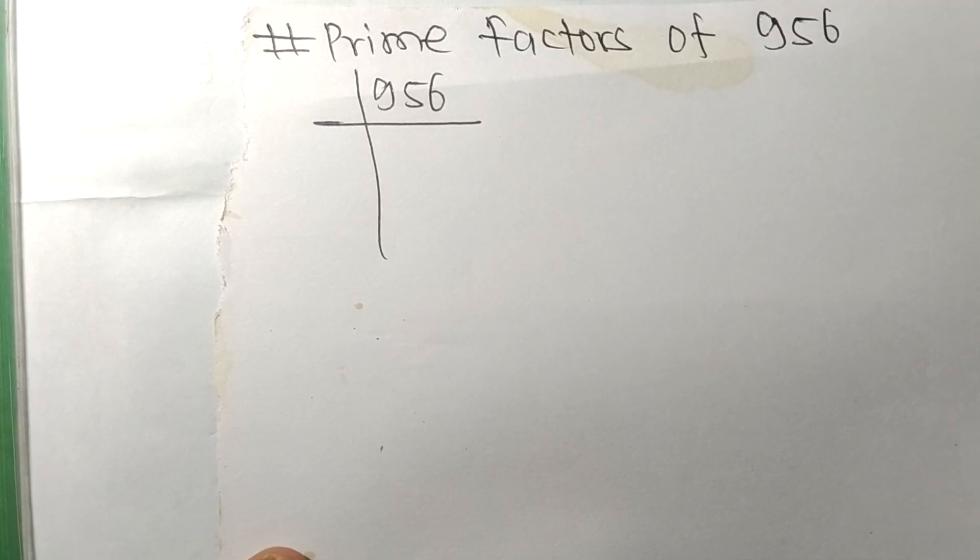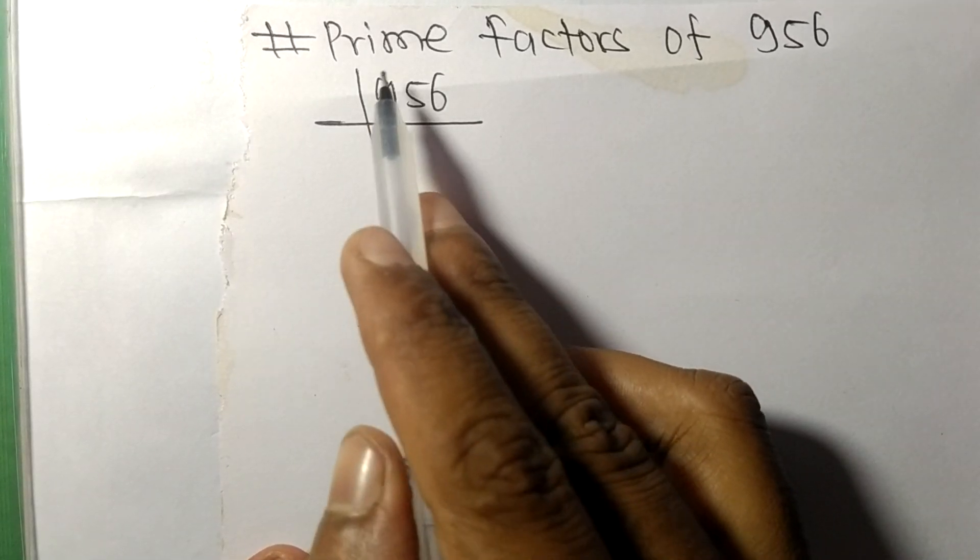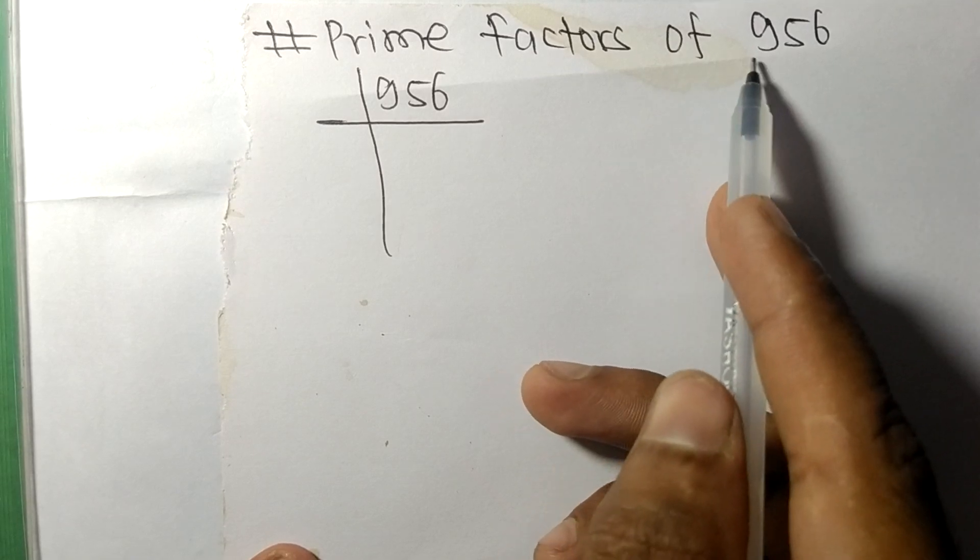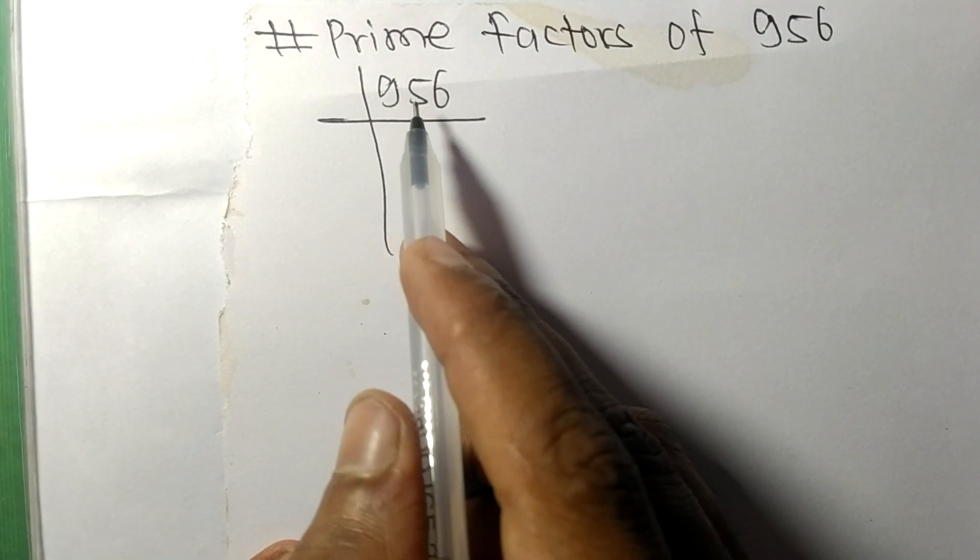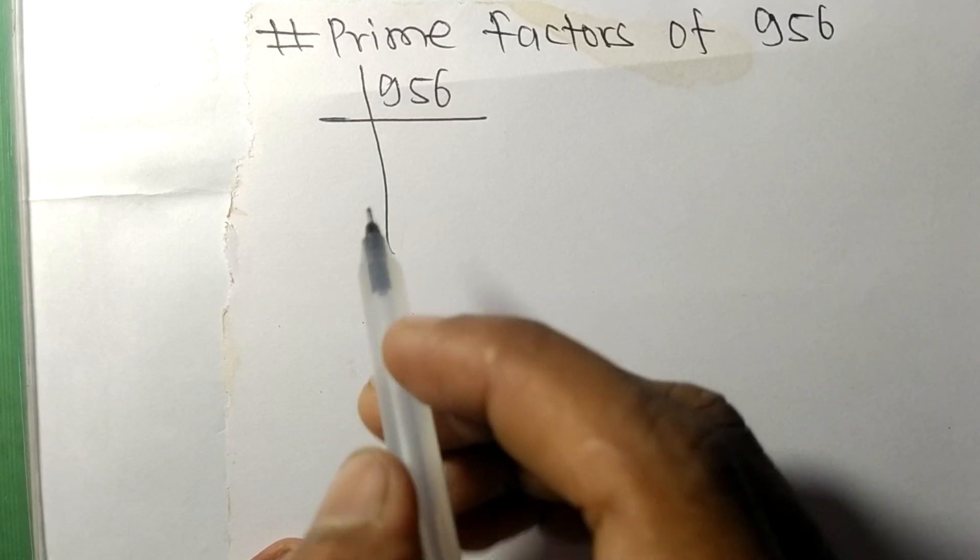Today in this video we shall learn to find the prime factors of 956. 956 contains an even number, 6, at last, so it is exactly divisible by 2.